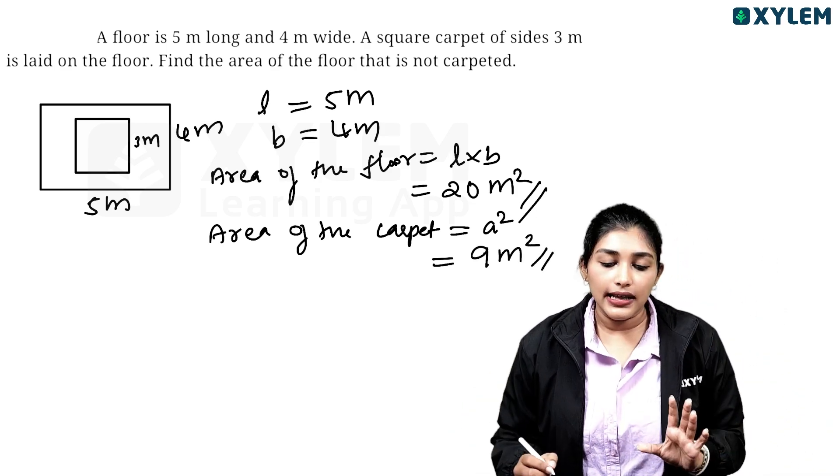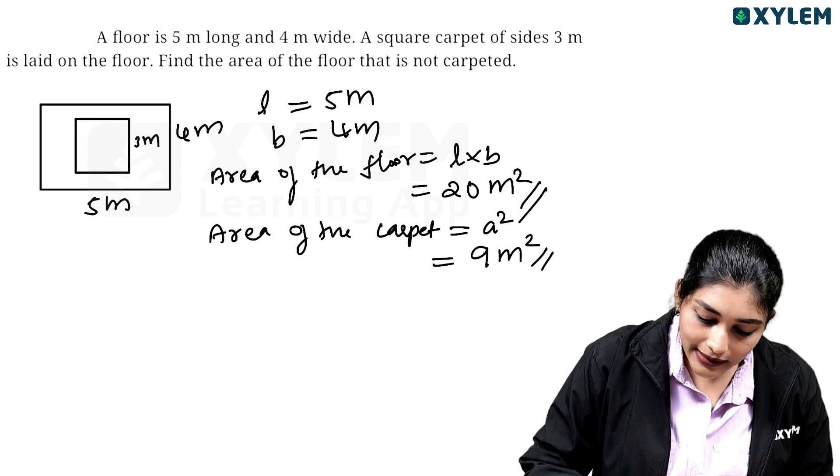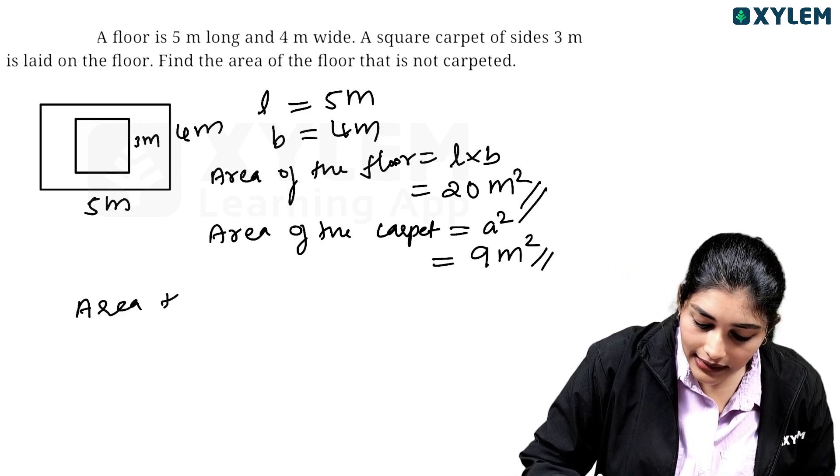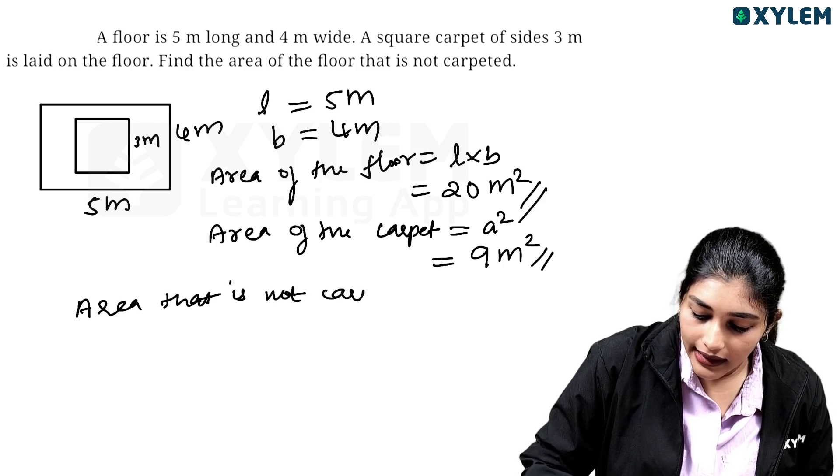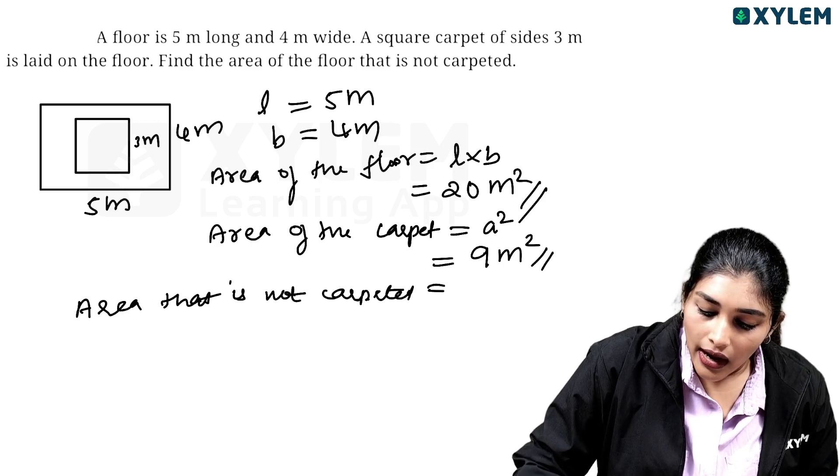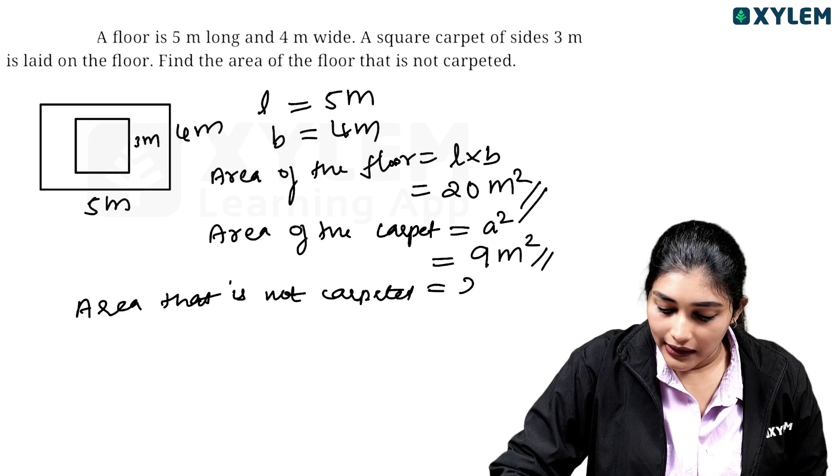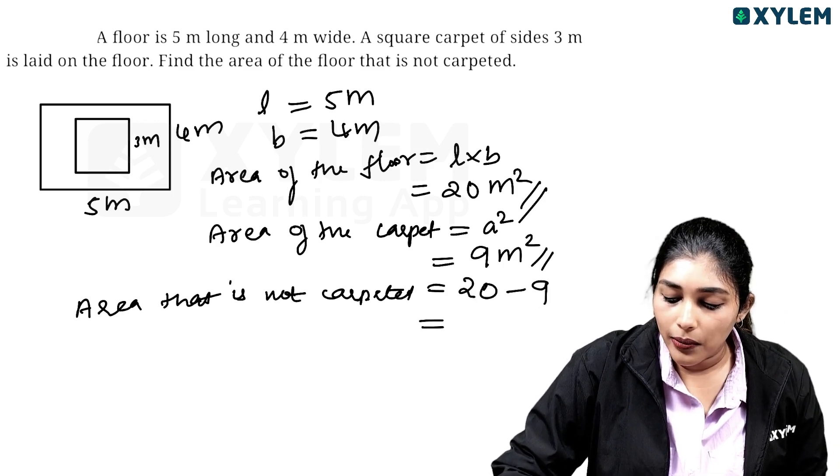3 square meter is 9 square meter. Carpeted area of the floor that is not carpeted. Area that is not carpeted.